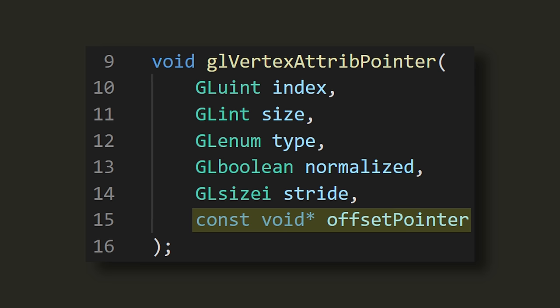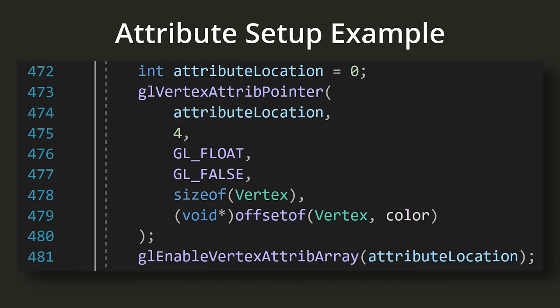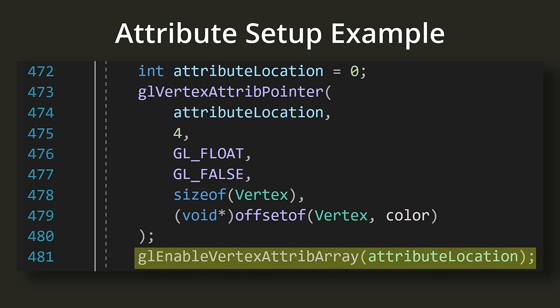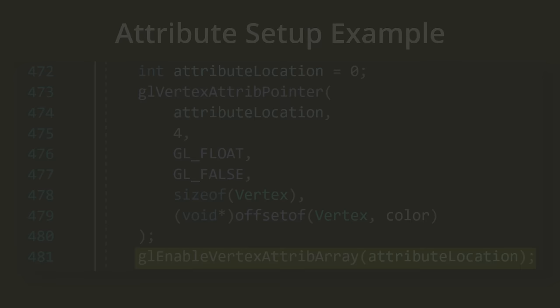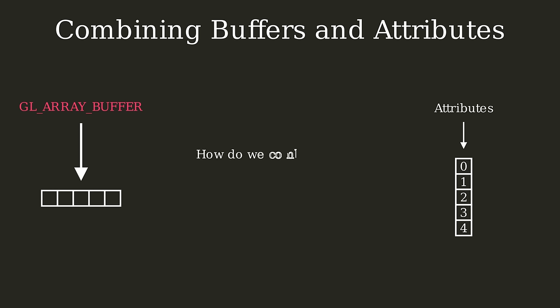If your data is tightly packed with no gaps between vertices, you can set the stride to 0 and OpenGL will implicitly assume the data is tightly packed. The pointer variable asks for the offset of the attribute within the data — you can use offsetof(Vertex, color) to obtain the appropriate value. After calling glVertexAttribPointer with the correct parameters, we need to call glEnableVertexAttribArray with the attribute location to ensure OpenGL enables this vertex attribute as part of the vertex array object's state.